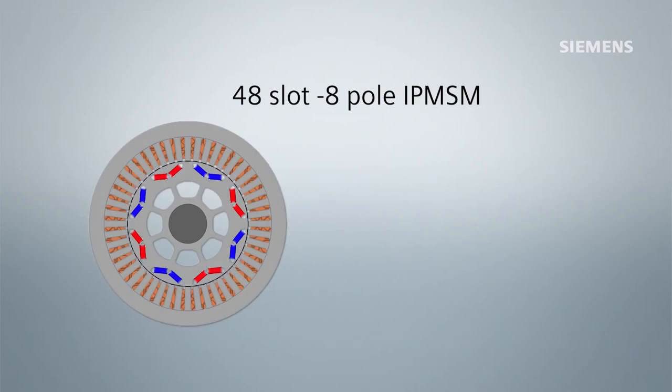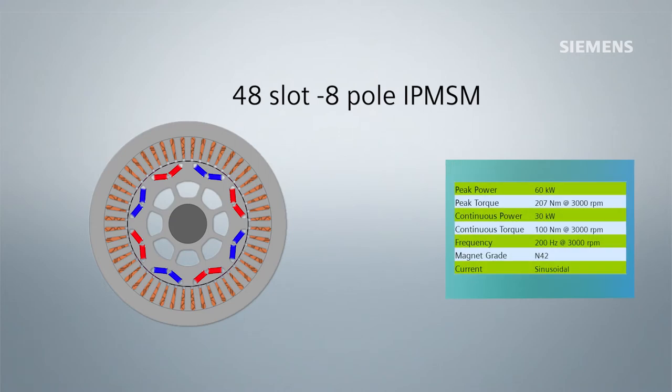Using Magnet 7.9 and a motor similar to that of a Prius 2010 for the given operating condition, we can show how to accurately analyze demagnetization in PM motors or generators.